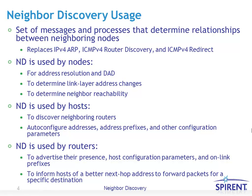Neighbor Discovery is used by any type of node, whether it's a host or a router, for duplicate address detection, to determine link layer address changes, and to determine neighbor reachability. It is used specifically by hosts to discover neighboring routers and use that information for auto configuration of its address — to assign its prefix and other configuration parameters.